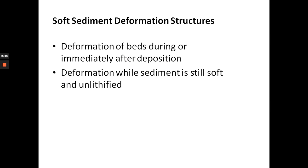The next type of sedimentary structure we want to look at are soft sediment deformation structures. Some of you may have encountered terms like syn-depositional or post-depositional deformation, but we generally lump them together as soft sediment deformation structures — sedimentary structures which are primary in nature, formed during deposition, but which have undergone deformation while the sediment was still soft.